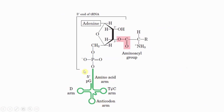The tRNA is attached to the amino acid via the terminal adenosine residue. The 3' hydroxyl group of the ribose sugar of the adenosine residue binds with the amino acid. The amino acid has a carboxyl group, an amino group, a variable side chain, and a hydroxyl group. The carboxyl group binds with the 2' hydroxyl group — this is how the amino acid is attached to the tRNA.